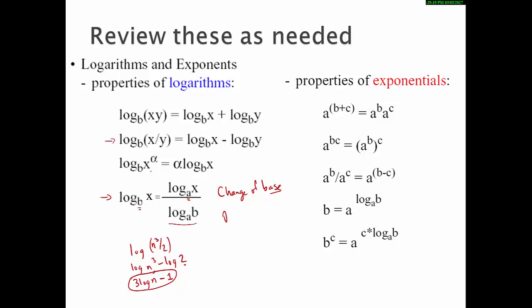So log base 10 of n is going to be big O of log base 2 of n. The base of the log doesn't matter when you're doing big O because you're just multiplying it by a constant.